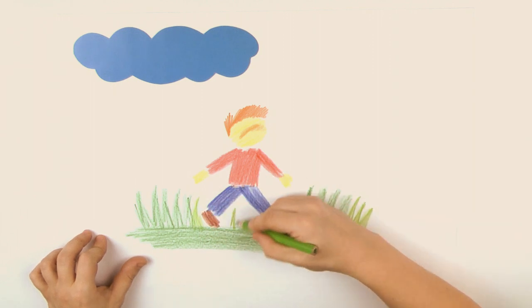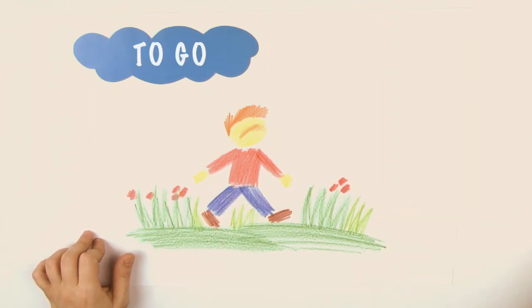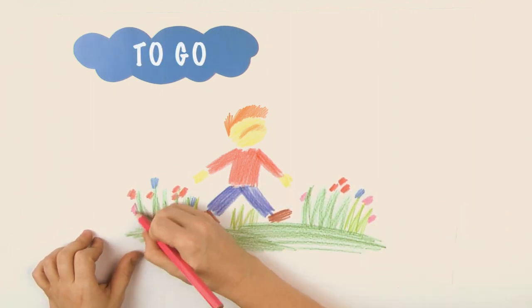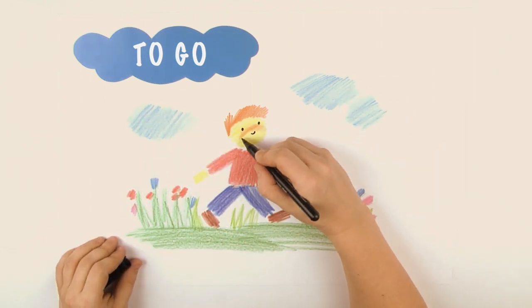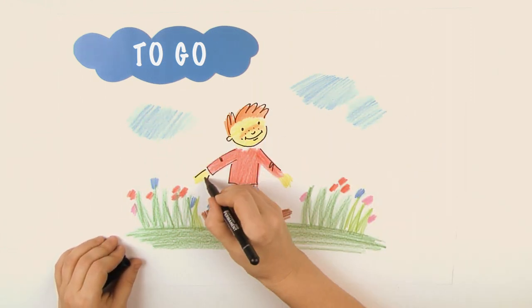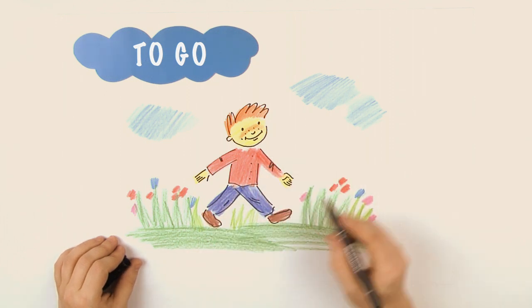Once, Тim decided to go to a pond. Однажды Тим решил отправиться к пруду. As he skipped along the path. И вприпрыжку побежал по тропинке.